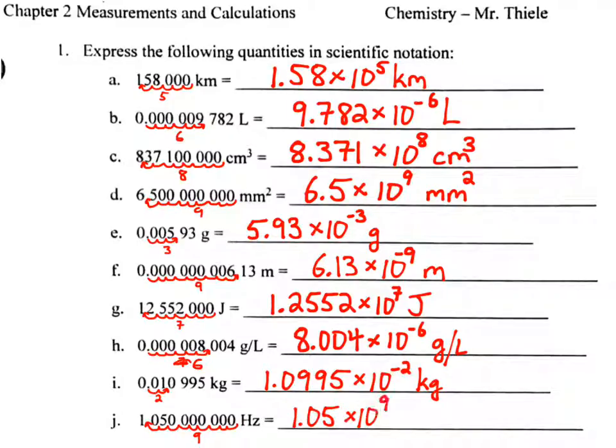times 10 to the ninth hertz. Okay, it's pretty simple to do this, this aspect of scientific notation is relatively simple. You learn to use this, and it makes life much easier moving forward in chemistry.